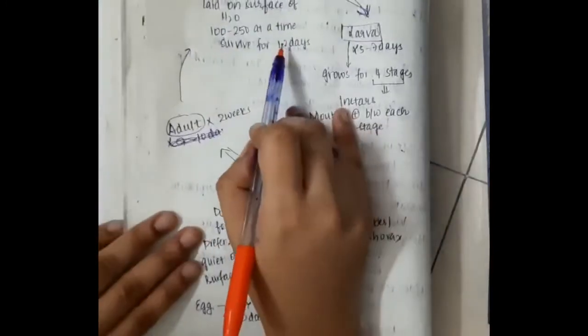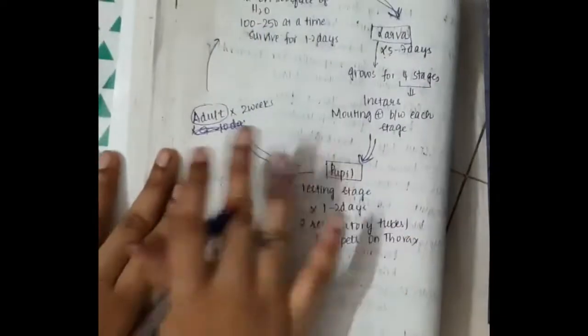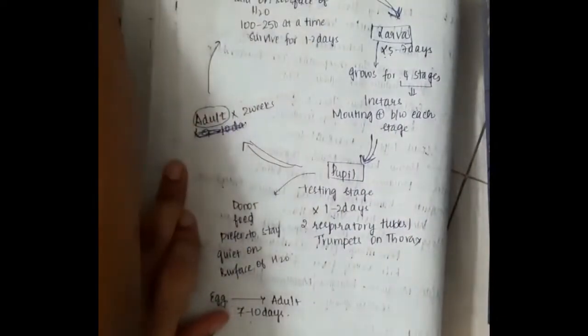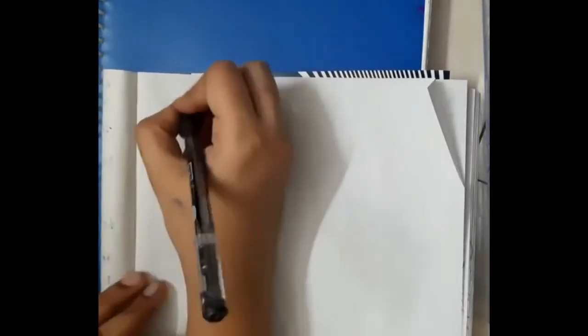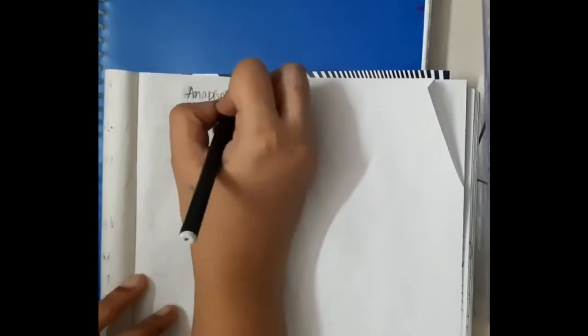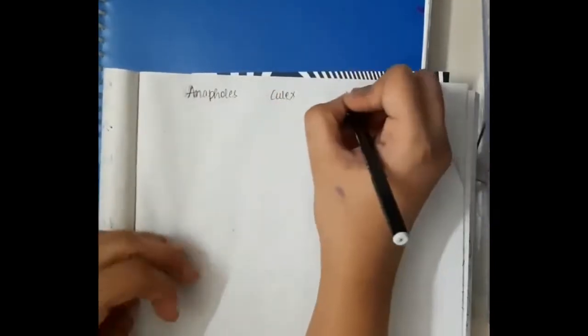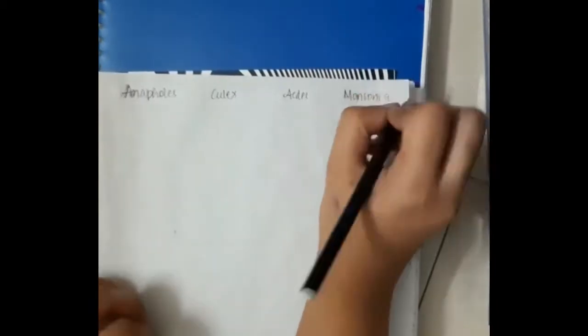From eggs to adult, for a mosquito to complete the cycle, it takes 7 to 10 days. Now let us learn about the differences between the 4 different types of mosquito: Anopheles mosquito, then Culex mosquito, Aedes mosquito, and Mansonia mosquito.